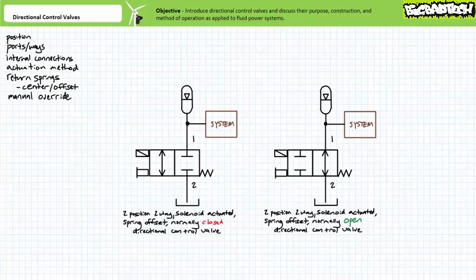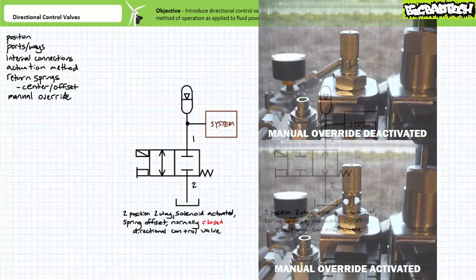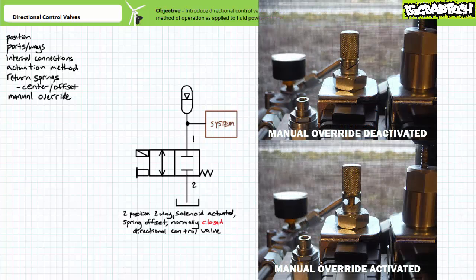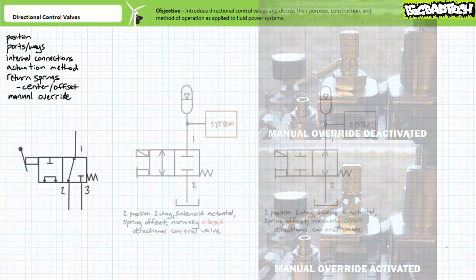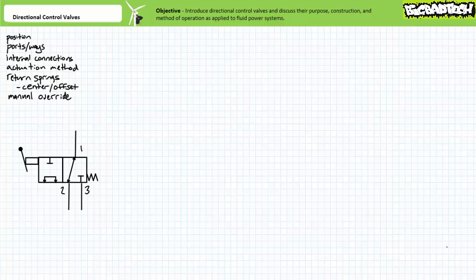Some automatically actuated directional control valves incorporate a means of manually overriding the valve's deactivated state. The schematic symbol for a manual override looks like a top outlet on its side. In the absence of a pilot electrical signal, or in the event of a damaged solenoid coil, an operator can push or pull the manual override to actuate the valve. The manual override on the normally closed valve would dump the pressurized fluid in the accumulator to tank. Manual overrides may or may not feature a detent that locks the valve in the new position.